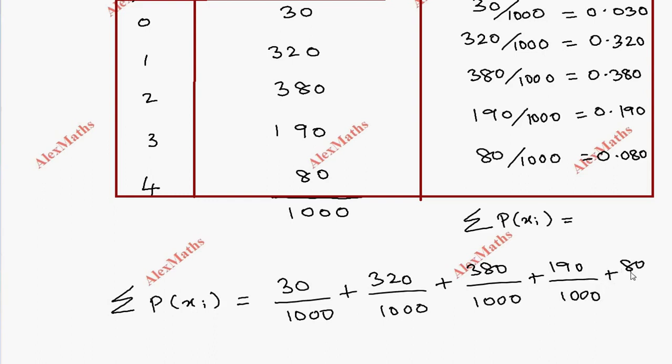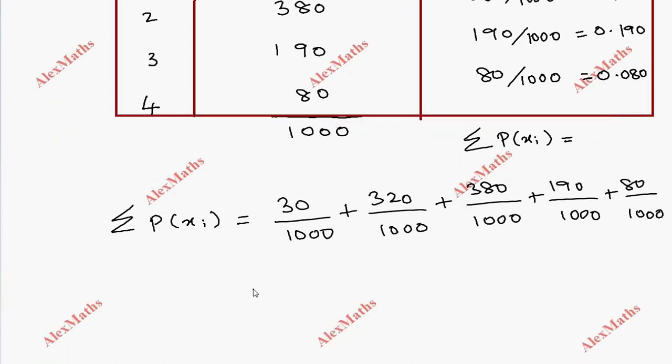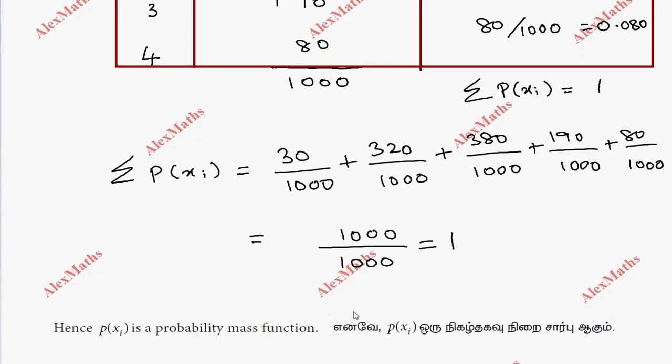So that's why 1000 is in the numerator, 1000 is 1000. If we cancel this, this equals 1. So this is 1. That's why this is a probability mass function.